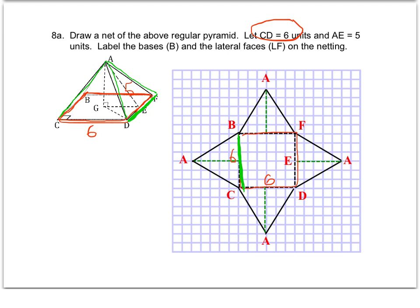Starting with that base edge value of 6, and knowing the slant height is 5, that represents this perpendicular distance. You go out 5 and then connect the dots to the vertices of that base edge. Do that all the way around — go out a perpendicular distance of 5 and connect around. We have four triangles as lateral faces, labeled LF all the way around. The square is the one base. I'll use this information to answer the questions with a little bit of math as we go.